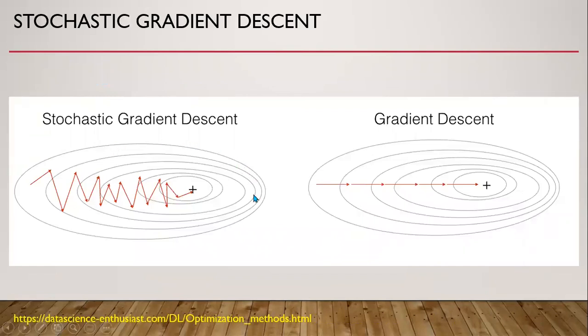This is the illustration of stochastic gradient descent and simple gradient descent. It has this kind of movement. Apart from learning rate, we also require momentum here in stochastic gradient descent.